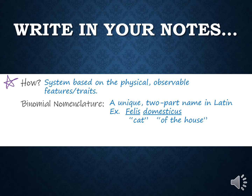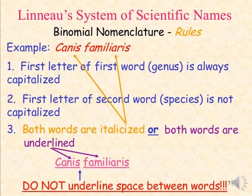Please write this exactly the way I have it written down. When you write binomial nomenclature names, there are specific rules. The first name — the genus — is always capitalized. The species is always lowercase. Because we don't often write in italicized print, we're going to underline them. You'll underline the first and underline the second, but notice there is a space left with no underlining because they're two separate words. Make sure you know the rules for writing binomial nomenclature.